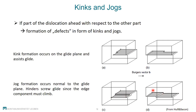For a screw dislocation with a jog, the glide plane of the jog itself is not favorably oriented — for example oriented like a basal plane — so when the dislocation wants to move, the jog cannot glide but has to climb. This means vacancies are needed locally to help the jog move, which requires time. In general, screw dislocations are hindered in their glide when a jog is present.